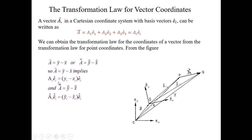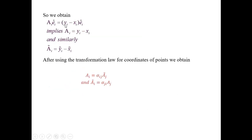In index notation, you have relations in both systems. With EI common, comparing gives AI equal to YI minus XI. Now the coordinates are subject to the transformation law already derived. After using the transformation law for coordinates of points, we obtain AI equal to alpha-ij Aj-tilde, and conversely AI-tilde equal to alpha-ji Aj.